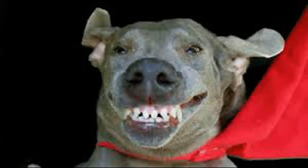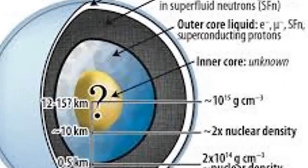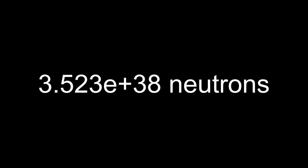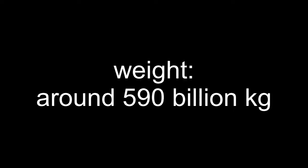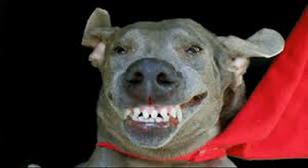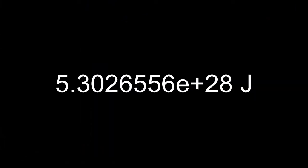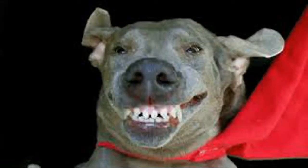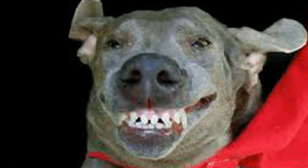So, how much energy would you need to create a cubic centimeter of pure neutrons? First of all, if the cubic centimeter you are creating is going to be packed with neutrons, there would be around 3.523E+38 neutrons inside, weighing around 590 billion kilograms. This would mean that you would have to use up 5.3026556E+28 joules of energy. In the process, you will also lose around 600 million kilograms of your own mass. By the way, this is equivalent to about 13 billion gigatons of TNT.